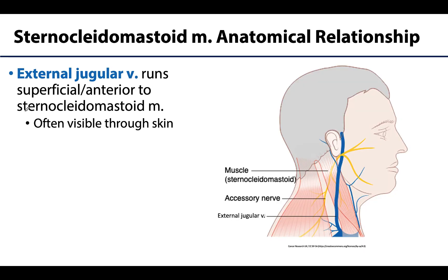One last thing about the sternocleidomastoid: there is a vein that runs just superficial and obliquely over the muscle — this is the external jugular vein. The EJV is the most dominant superficial vein of the anterior neck. The visibility of the external jugular vein can serve as a gauge of venous pressure. If venous pressure is normal, the EJV is typically only visible a little bit above the clavicle, whereas if venous pressure rises, the vein becomes considerably more prominent and visible, sometimes throughout its entire length.